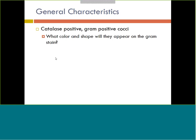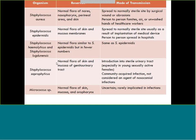As a reminder, gram positive cocci will be dark purple for the positive and balls for the cocci on a gram stain. Here are some of the major staph organisms — there are a ton of staph out there and this list is not comprehensive. The most important one is staph aureus — it is a huge pathogen we see very commonly in the lab.